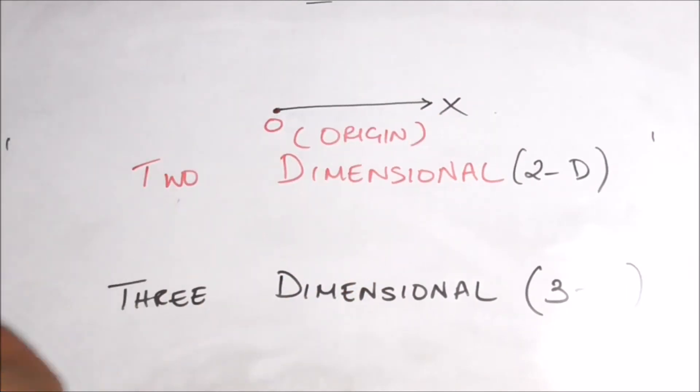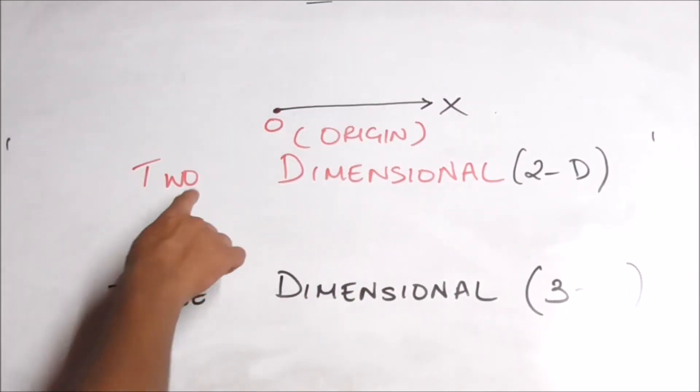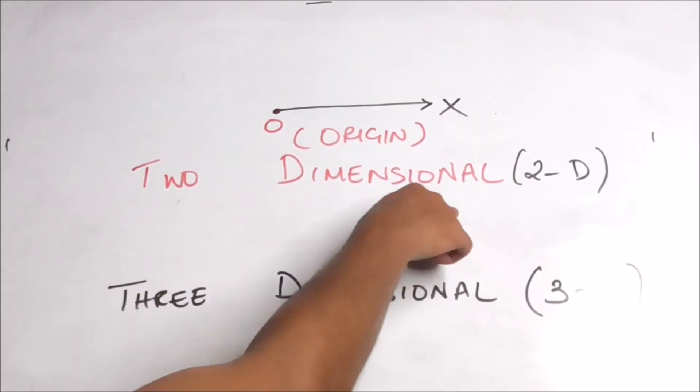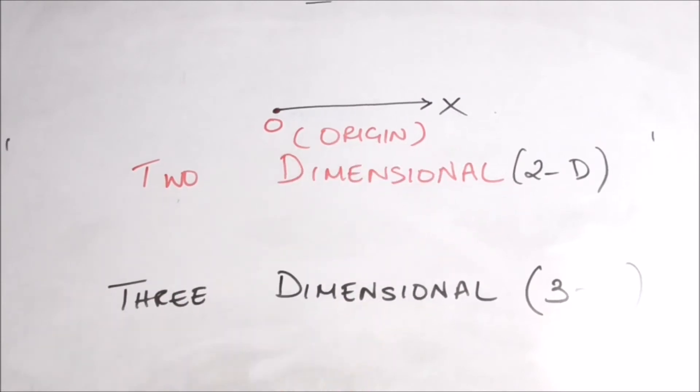So, if you have a two-dimensional space, it's two dimensions — it's two-dimensional.